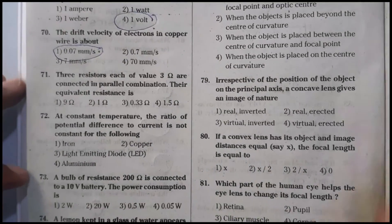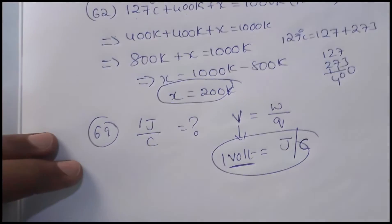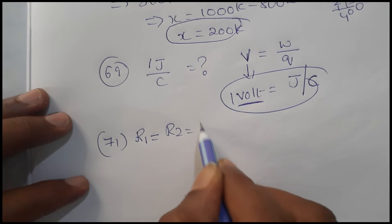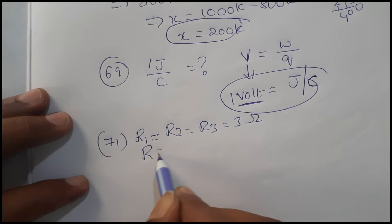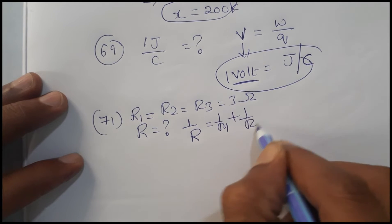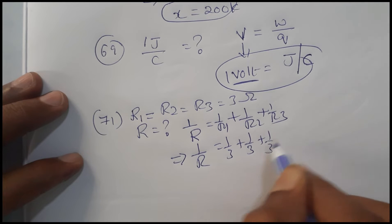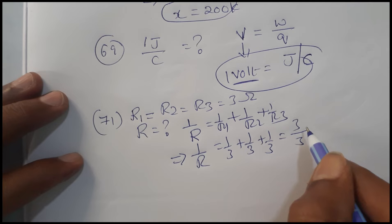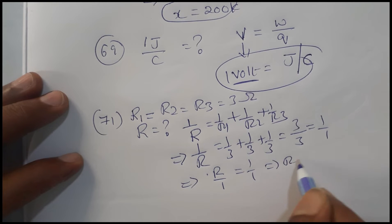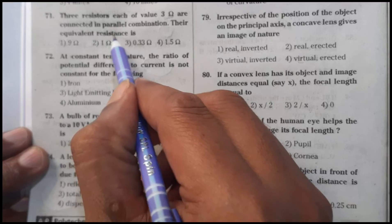Question 71: Three resistors, each of 3 ohms, are connected in parallel — what is the equivalent resistance? In parallel combination, 1/R equals 1/R1 plus 1/R2 plus 1/R3, which gives 1/R equals 1/3 plus 1/3 plus 1/3 equals 3/3 equals 1. Therefore R equals 1 ohm.